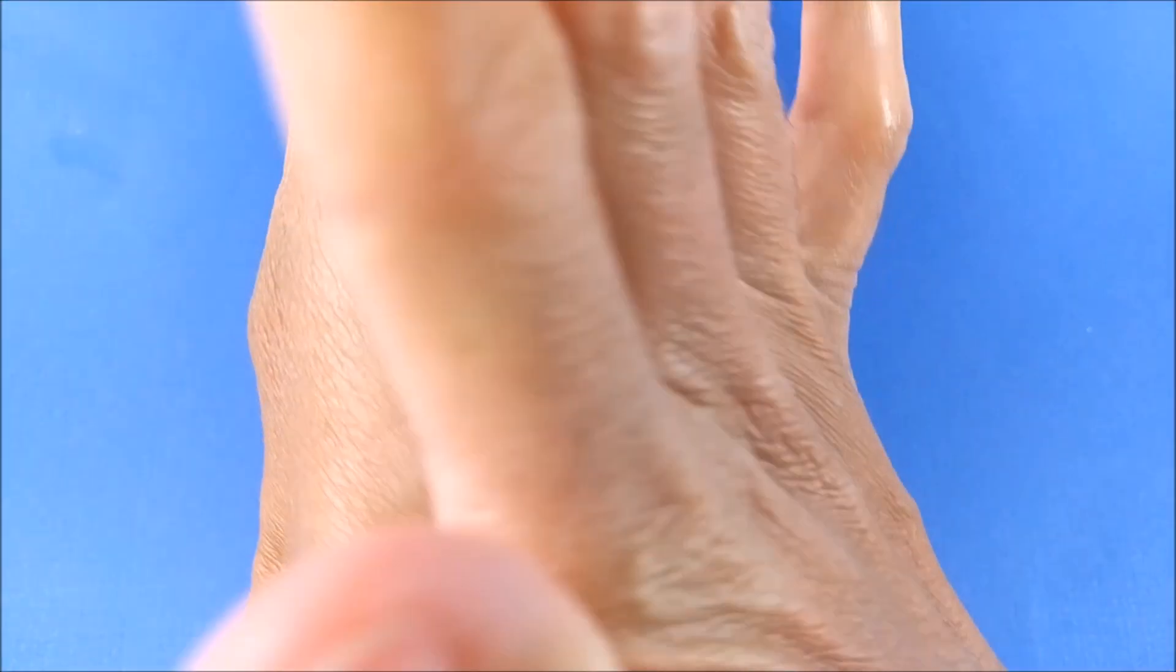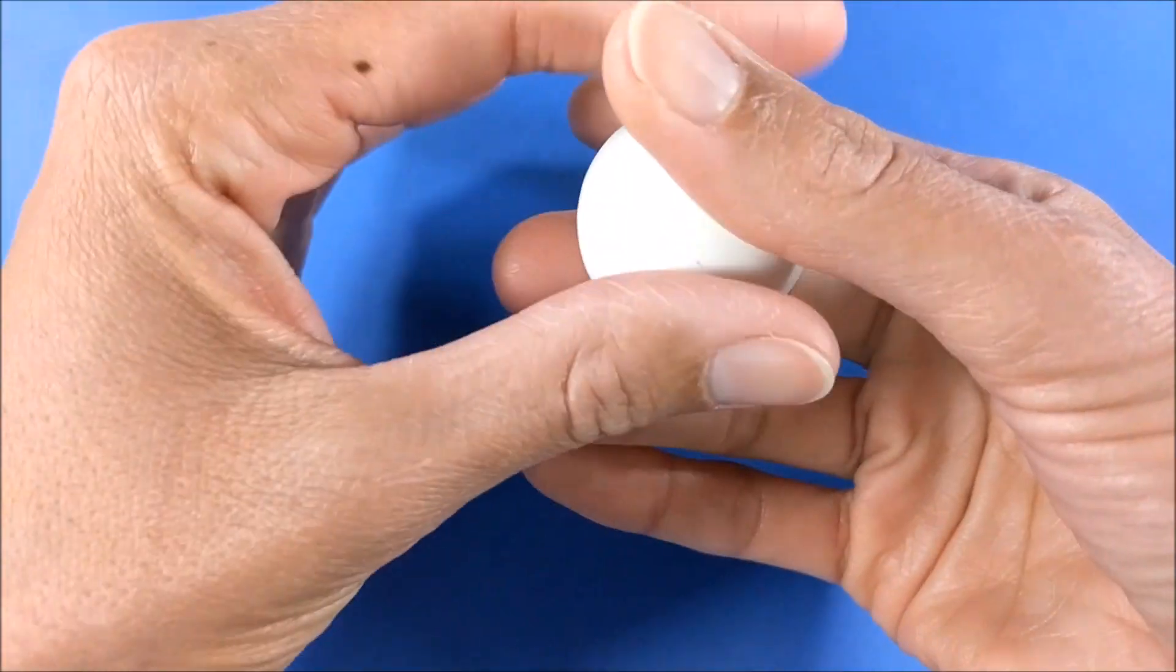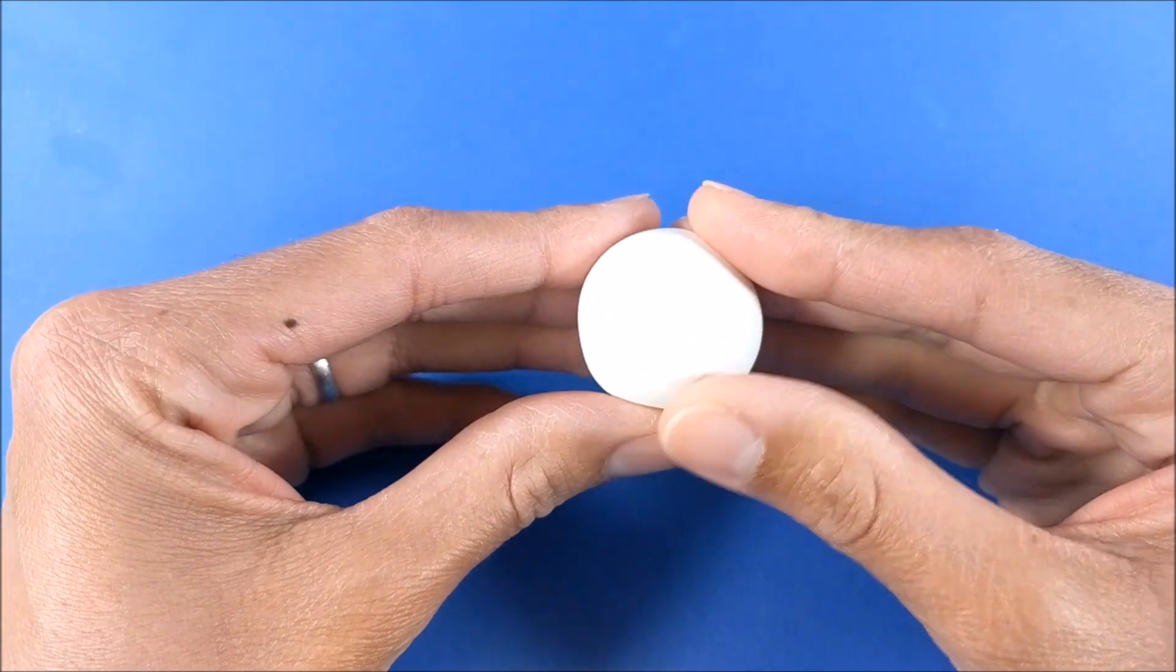Okay guys, so first for the pumpkins I'm just using model magic. I roll it into a ball, trying to eliminate any seams, then just kind of flatten it out.